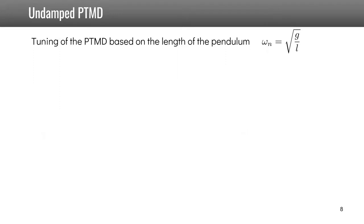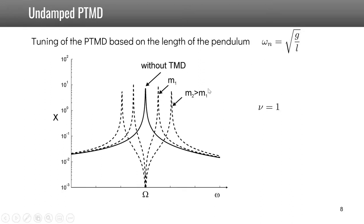So again, we can choose to have the natural frequency of this pendulum equal to the natural frequency of the primary system. Tuning of this frequency is done by changing the length of the pendulum, as g cannot be changed on earth. If we do that, we will cancel the vibration at the natural frequency of the system. If we change the mass of the pendulum, it will not affect the natural frequency, which is not a function of the mass, but we will change the spreading of the peaks. The higher the mass, the more spreading we will have.